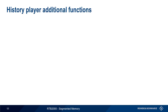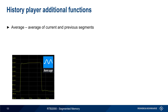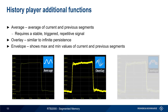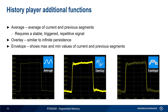In live mode, there are three additional history player functions. Average displays the average of the current and all previous segments; this can reduce the influence of noise, but does require a stable, triggered, repetitive signal. Overlay mode draws the acquisitions on top of each other, with an effect similar to infinite persistence. Envelope mode displays the max and min values of current and previous segments, along with the currently played back acquisition.